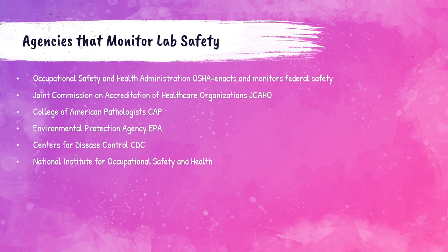OSHA also monitors the Bloodborne Pathogen Standard, enacted in 1991, which prescribes safeguards to protect workers against health hazards related to bloodborne pathogens or other potentially infectious materials. The Personal Protective Equipment standard ensures employers provide adequate protective equipment — including PPE for eyes, face, head, and extremities — and keep this equipment maintained in a sanitary and reliable condition.